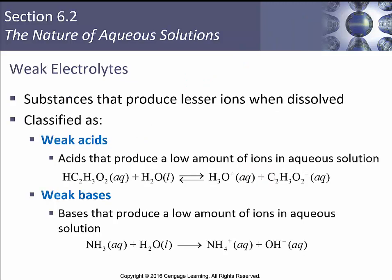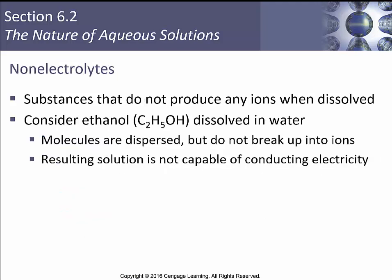Substances that only produce a small amount of ions when dissolved are classified as weak acids, weak bases, or sparingly soluble salts. Acetic acid is a weak acid — like 95% or more stays as acetic acid, with only a little dissolving into H₃O⁺ and acetate. Ammonia is a weak base — it reacts with water to form ammonium (the conjugate weak acid) and some OH⁻, but stays about 90% or more as NH₃. Non-electrolytes like ethanol dissolved in water have dispersed molecules but don't break up into ions, so the resulting solution is not capable of conducting electricity.